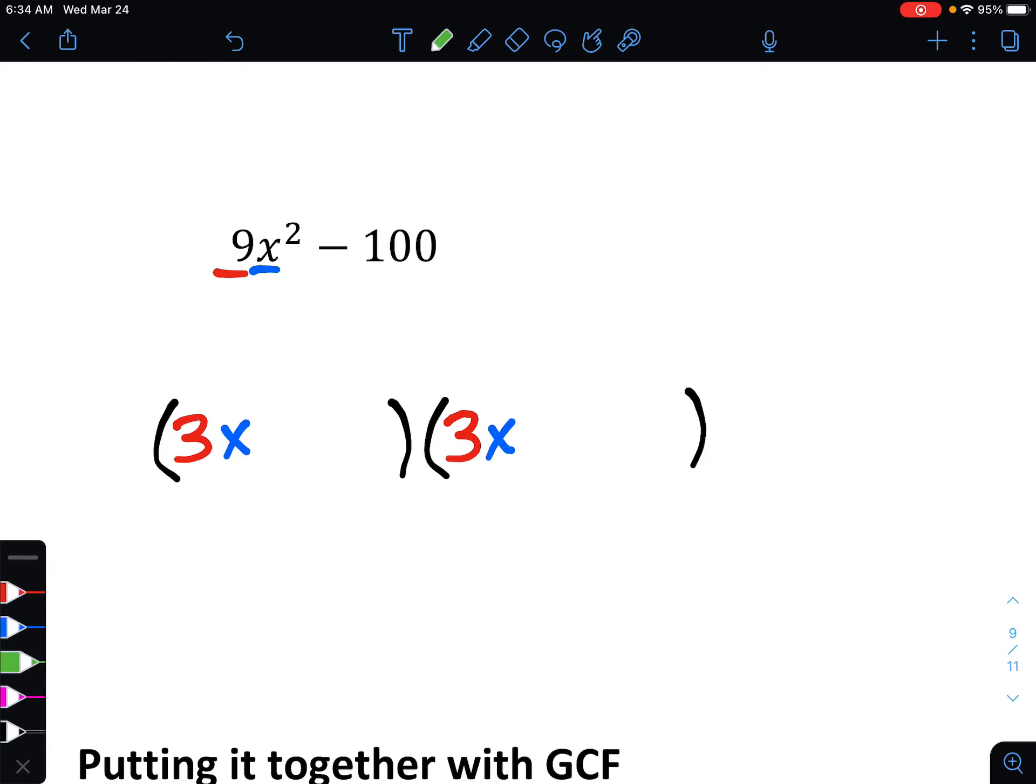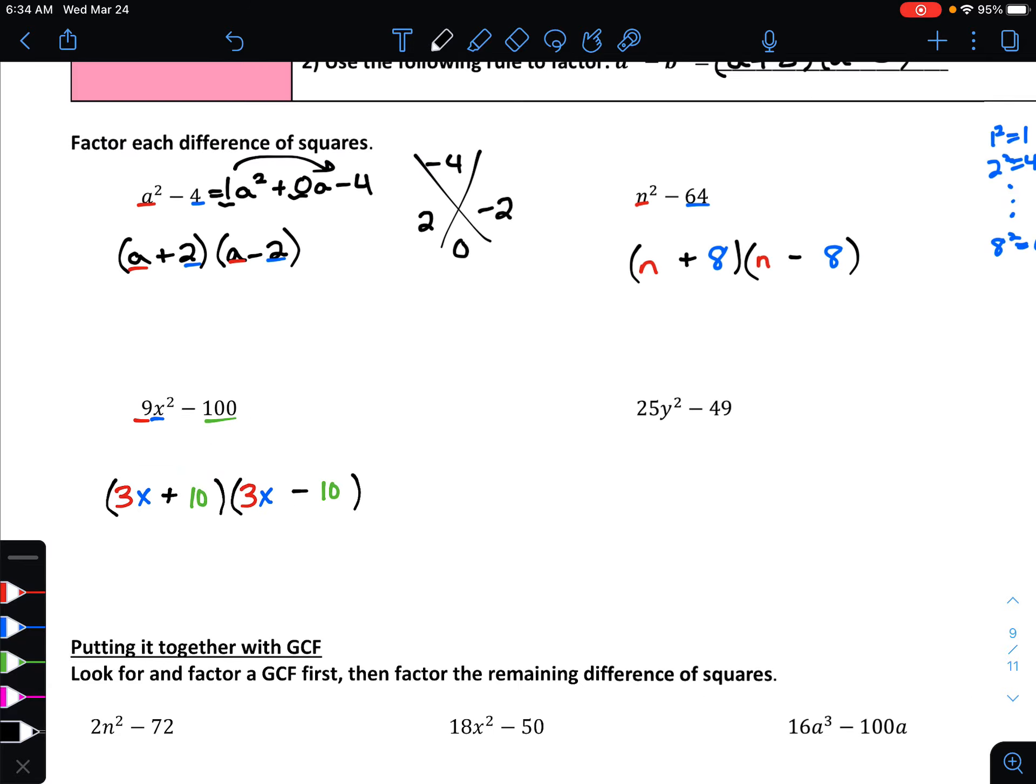Next, what is being squared to give us x squared? That's just x. Finally, what number is being squared to give us 100? That should be pretty easy. That's going to be 10. And now we make one of them positive, one of them negative, and we're done.